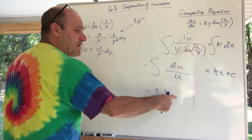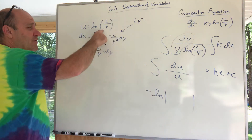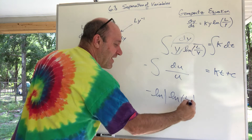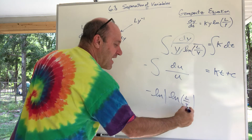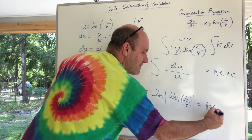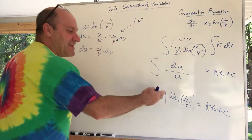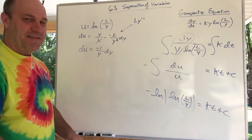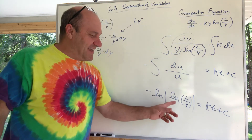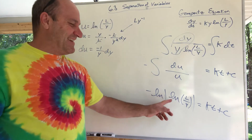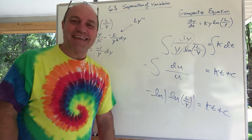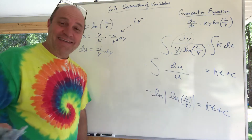So the answer is negative ln of u, and u is ln(L/y). Therefore: negative ln(ln(L/y)) equals kt plus C. Now let's solve for y. I would multiply by negative 1 first, so ln(ln(L/y)) equals negative kt plus C. The C absorbs the negative sign — it's a new arbitrary C.